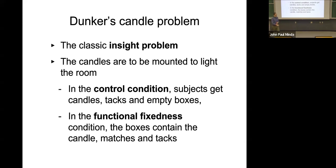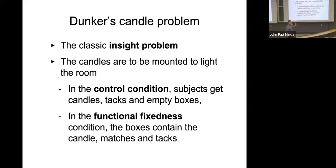In the functional fixedness condition, the function of an object is constrained by what you see it doing now. In this case, you have a box of candles, a box of matches, or a box of tacks. The solution in Duncker's original example was to take the tacks, tack the box to the wall, and then put the candle in the little box so that it makes a tiny shelf. Not very safe — the candle is too close to the wall and it'll probably catch the wall on fire — but the point is this solution is available.